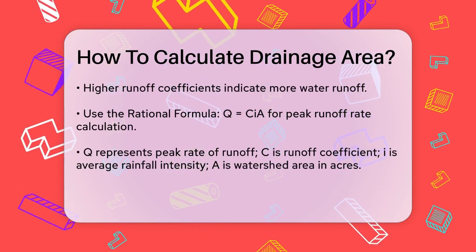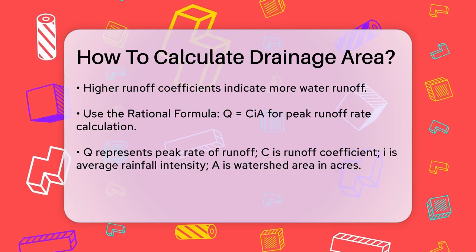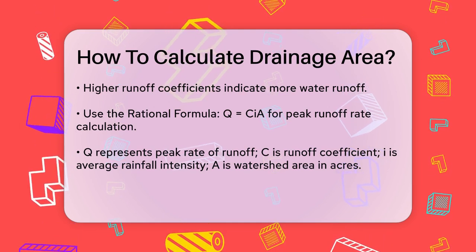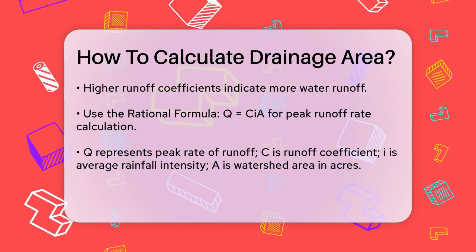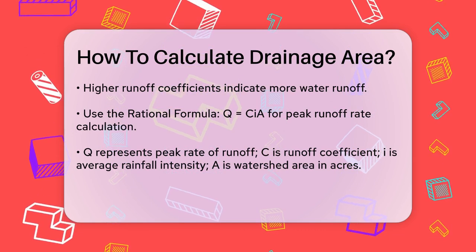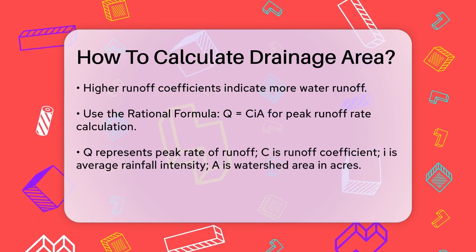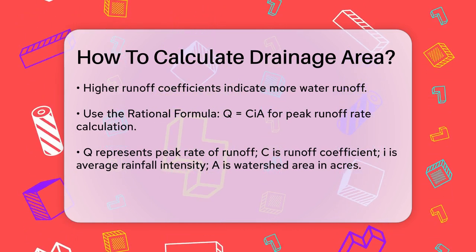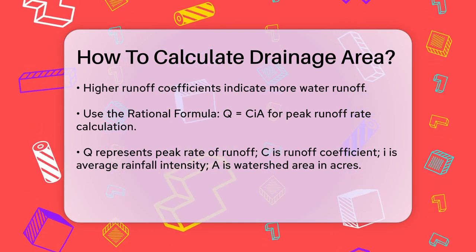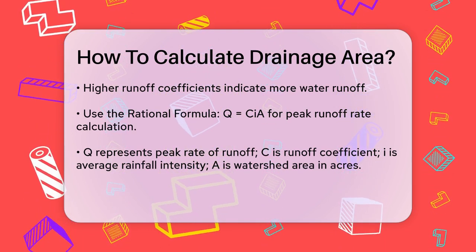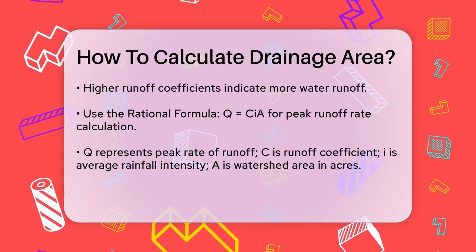Once you have the area and the surface type, you can use the rational formula to calculate the peak runoff rate. The formula is Q = CIA, where Q is the peak rate of runoff, C is the runoff coefficient, I is the average intensity of rainfall, and A is the watershed area in acres.